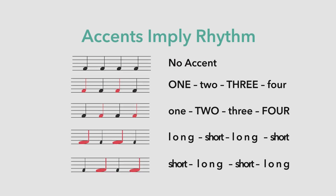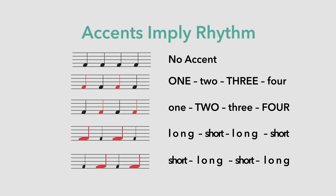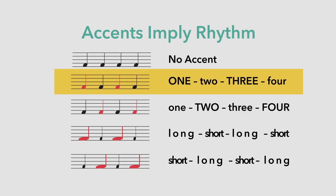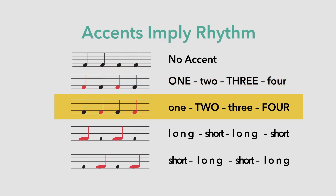An accent is anything that is attention-getting, like a change in loudness, or duration, or pitch. For example, let's imagine a simple kick-snare-kick-snare pattern in a 4-4 time signature at 105 beats per minute. The record maker can choose to accent the kick on beats 1 and 3, or accent the snare on the 2 and 4.